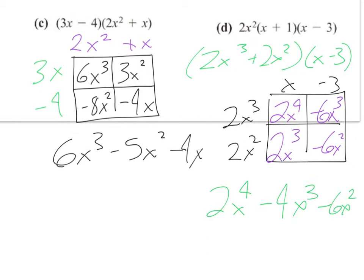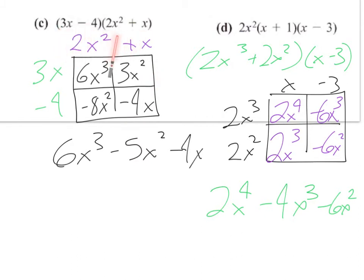I highly recommend adopting this box method for multiplying polynomials. One of the great things is that for a binomial times a binomial you set up a 2×2 box, but if you have a trinomial or something else, you can just change the dimensions of the box to fit the situation.